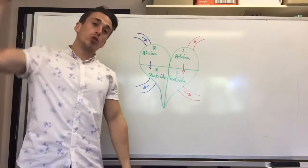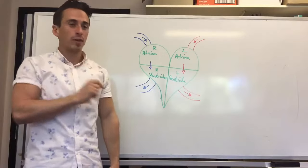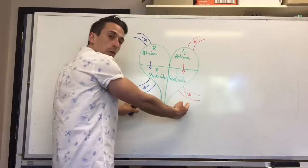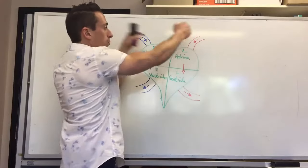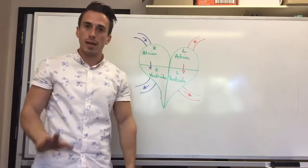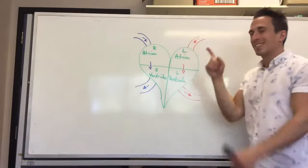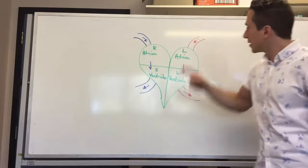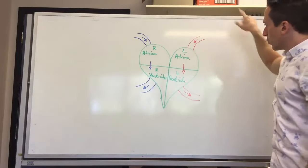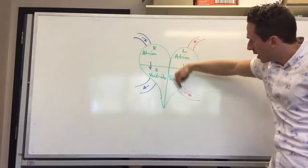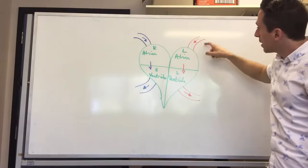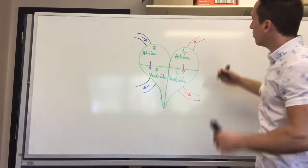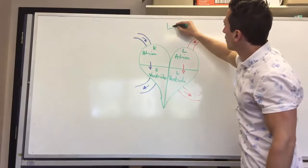Any time a vessel goes towards the heart, it's called a vein. Any time a vessel goes away from the heart, it's called an artery. So the two exiting vessels are arteries moving away from the heart, and the two entering vessels are veins moving towards the heart. The red oxygenated blood on the left side is coming from somewhere that gave it oxygen — which means this vessel going towards the left atrium has just come from the lungs.